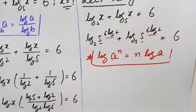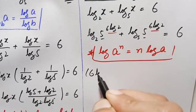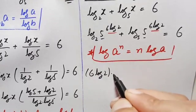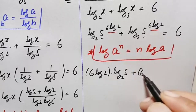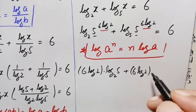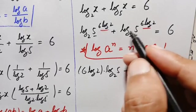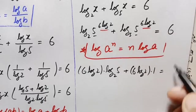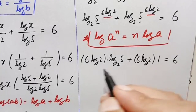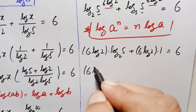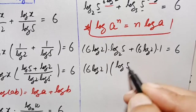The left hand side becomes: 6 times log of 2 times log of 5 with base 2, plus 6 times log of 2 times log of 5 with base 5. Since log of 5 with base 5 equals 1, the second term simplifies. Factoring out 6 times log of 2 common from both terms gives 6 times log of 2 times (log of 5 with base 2 plus 1).